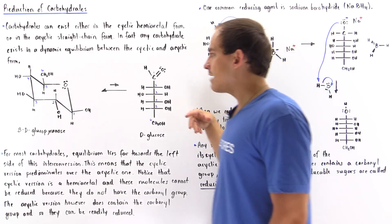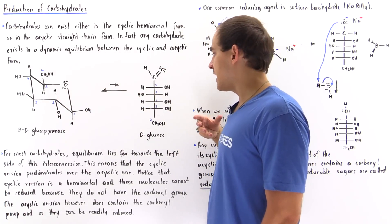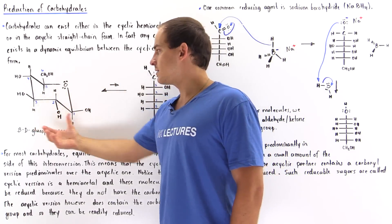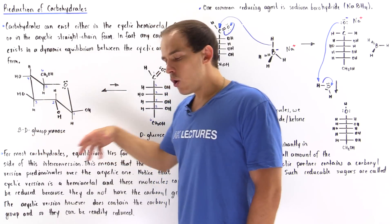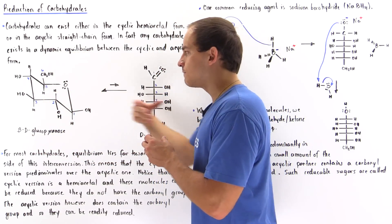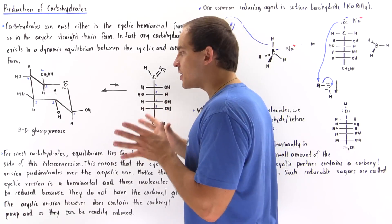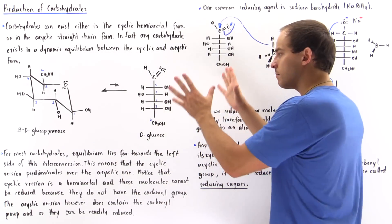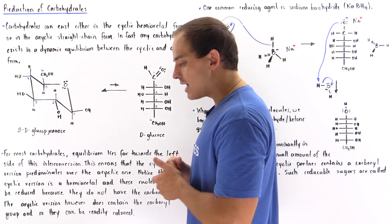Basically, we have an interconversion taking place from our product—let's say this is the product, our acyclic—to the reactant, our cyclic. When equilibrium is established, we still have the conversion taking place, but the concentration of our reactant, the cyclic, remains constant, and of the product also remains constant.